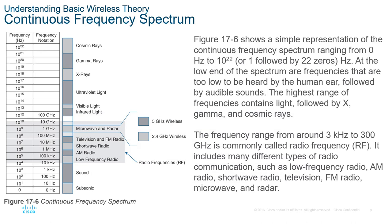Looking at the actual frequency spectrum, we can see there is a very narrow window for our wireless technologies. Radio frequencies are typically in the 10 kilohertz to 10 gigahertz range, and depending on what we are trying to accomplish — AM radio, FM radio, television, short-range, shortwave radio — all have very specific frequencies. Within the microwave and radar range we have two frequency ranges for wireless technology: 5 GHz and 2.4 GHz. These are normally selected because they are unlicensed, free-to-use frequencies, while most other frequencies require licensing.